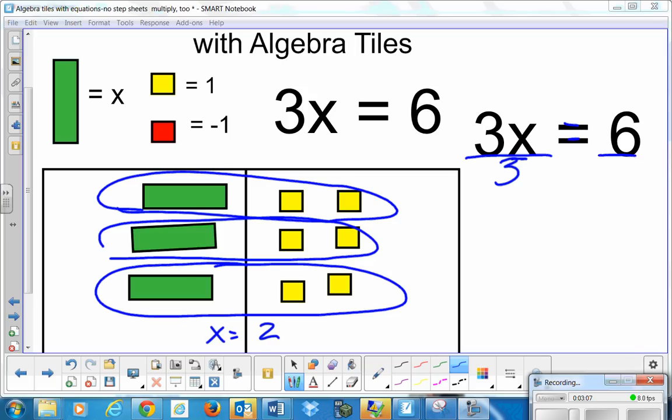And if I divide on the left, I have to divide on the right. My 3's will cancel out because we all know 3 in the numerator, 3 in the denominator cancels out to be 1. So I'm left with x is equal to, and 6 divided by 3 is 2.